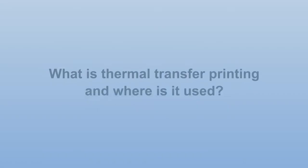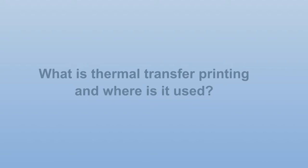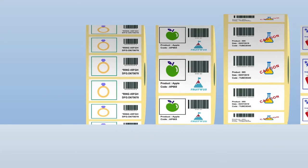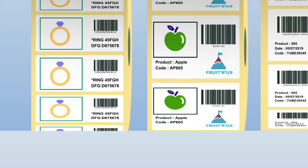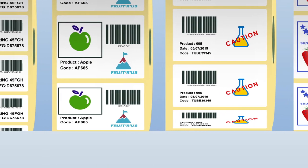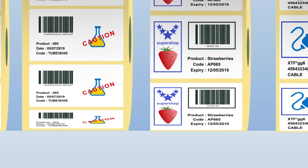What is thermal transfer printing and where is it used? Thermal transfer printing is a technology used to print variable information onto rolls of plain or pre-printed labels and packaging films.